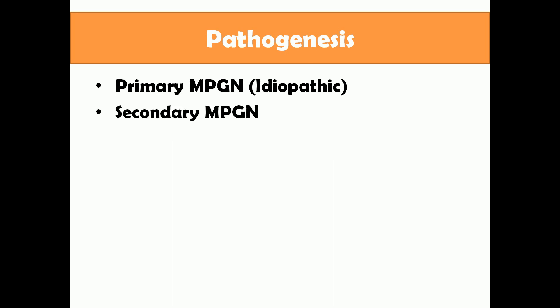Based on pathogenesis, MPGN is classified into primary MPGN, which is idiopathic, and secondary MPGN, which is secondary to known diseases. The cause of primary MPGN is not clearly known. In secondary MPGN, the condition occurs secondary to immune disorders or chronic infections such as hepatitis B or hepatitis C.